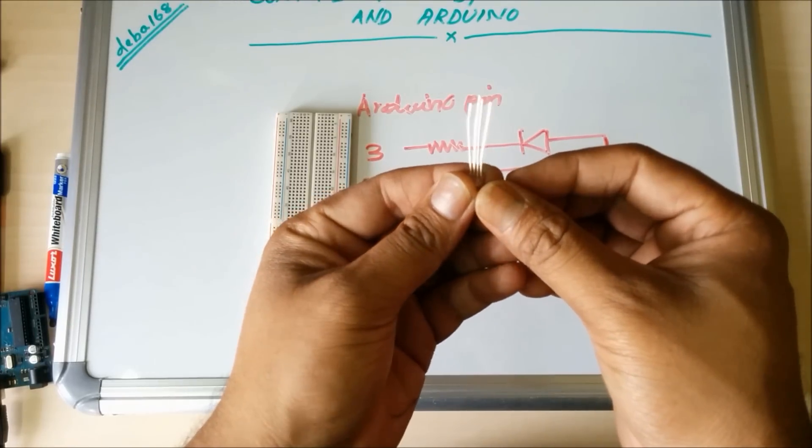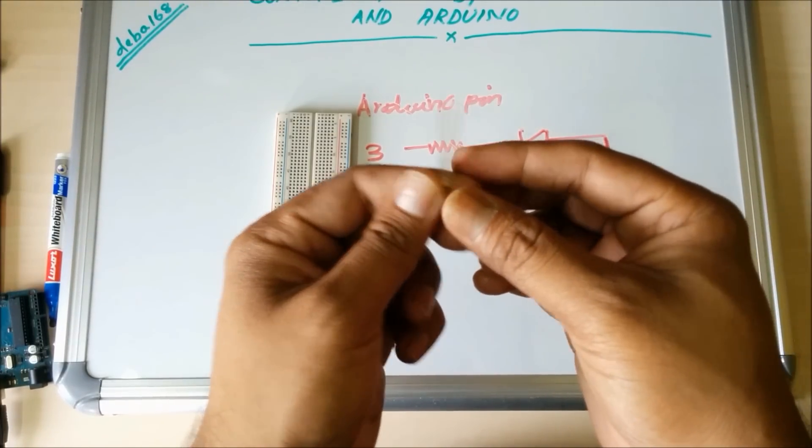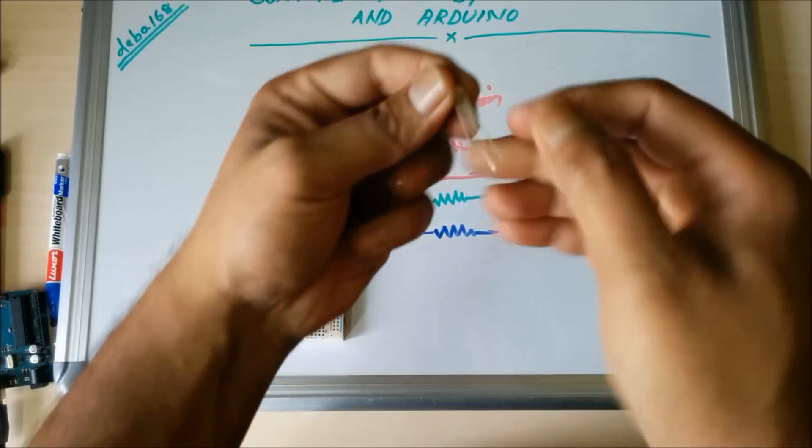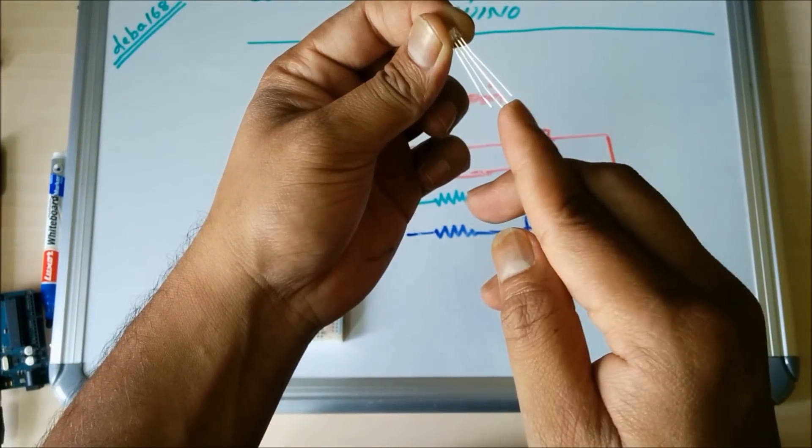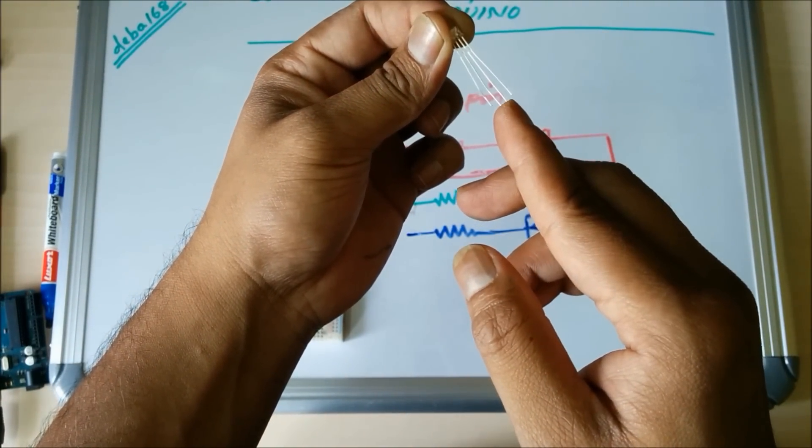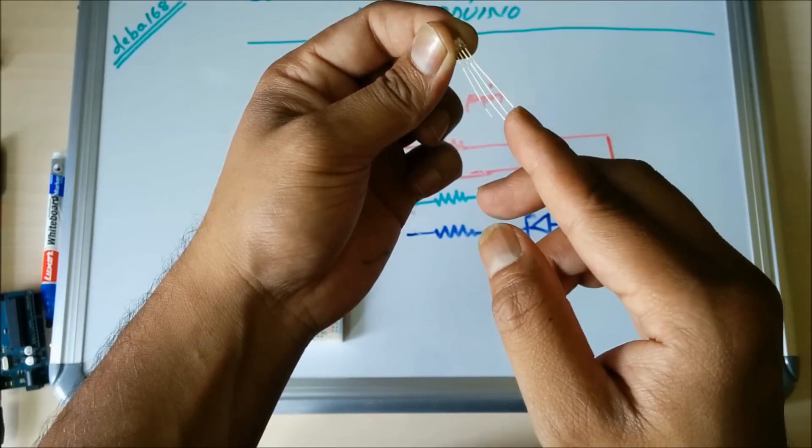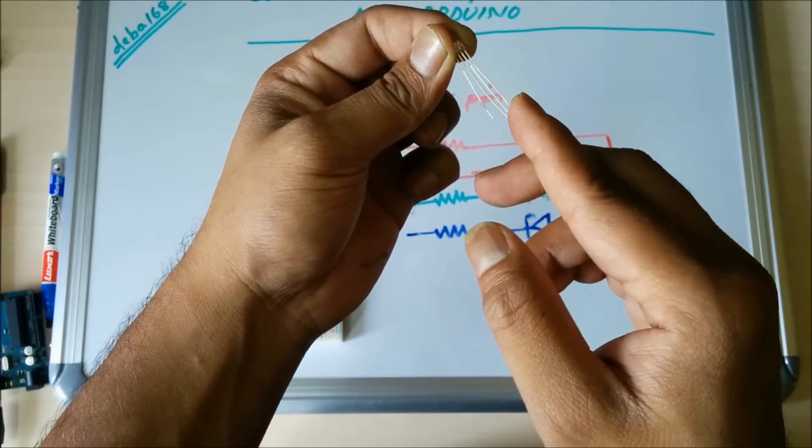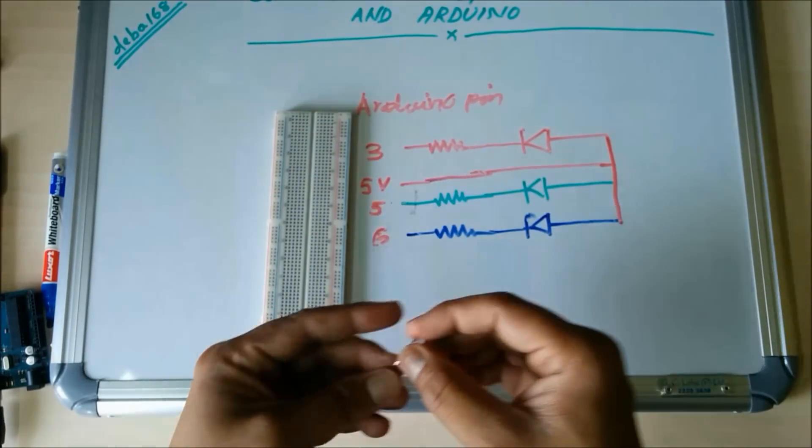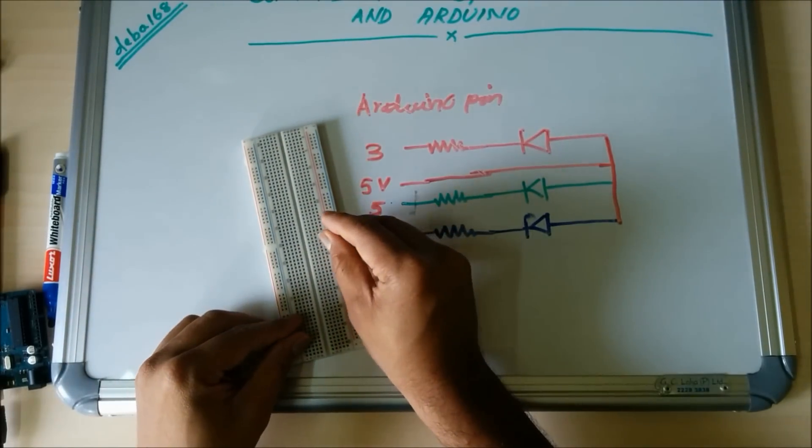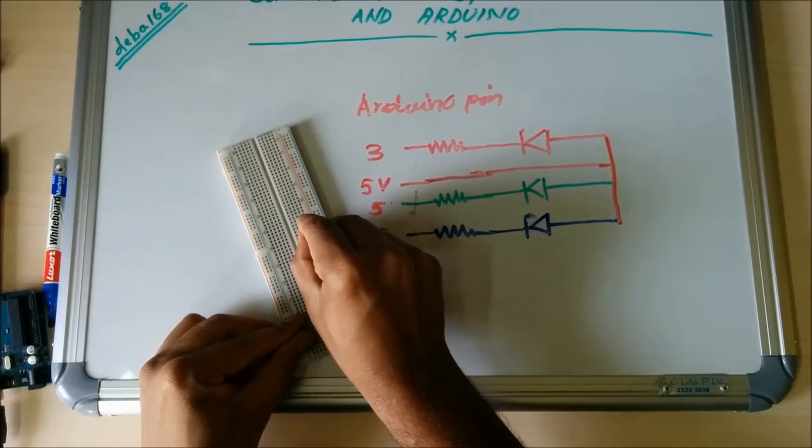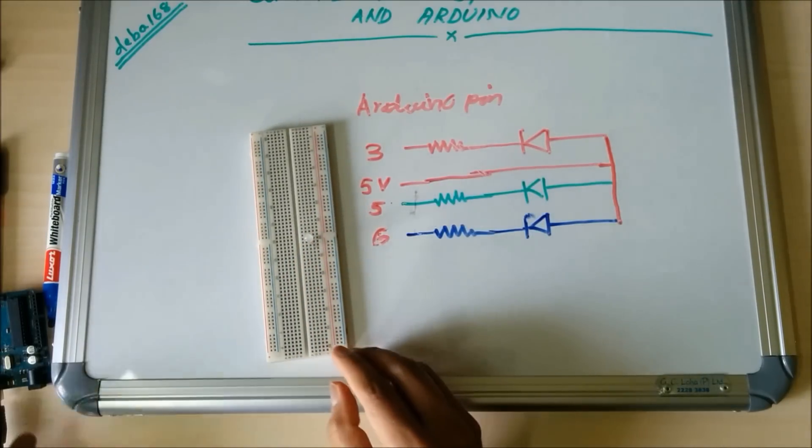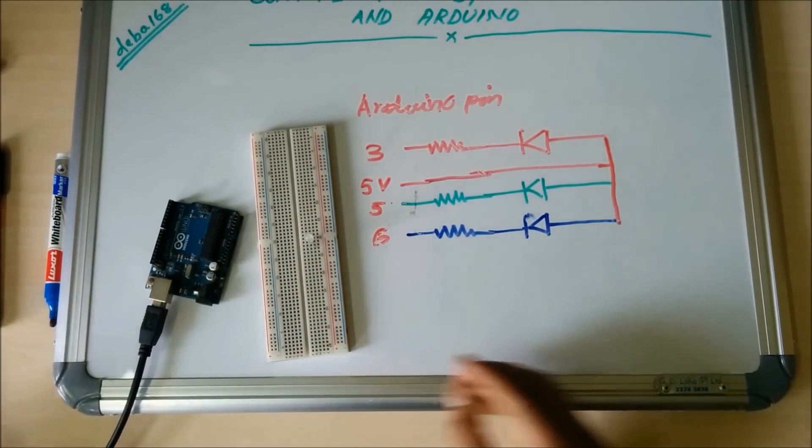The RGB LED has four pins. From the left side, the first pin is red pin, the longer one is common anode pin, then the green pin, and the last one is blue pin. First insert the RGB LED.